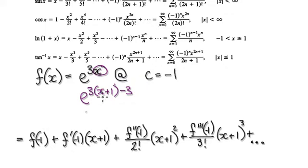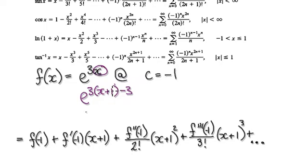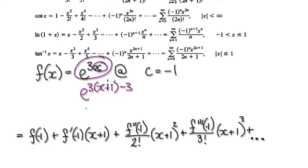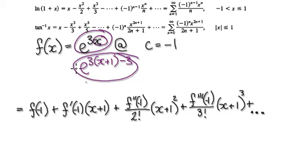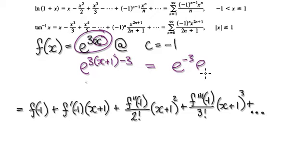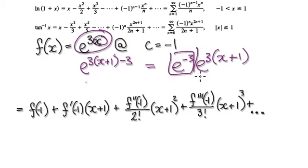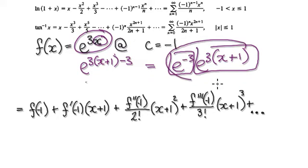We need to make this adjustment so that now this is exactly the same as this. This whole thing here is the same as e to the power of minus 3 and then e to the power of 3 times (x plus 1). This is just a constant, and this whole thing here is exactly the same as this. So now we just need to expand this.